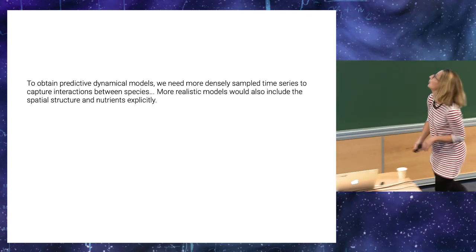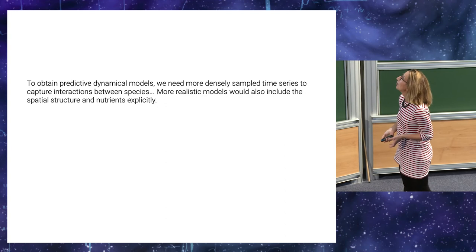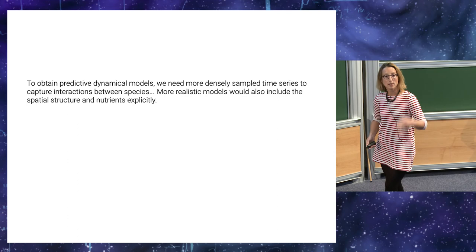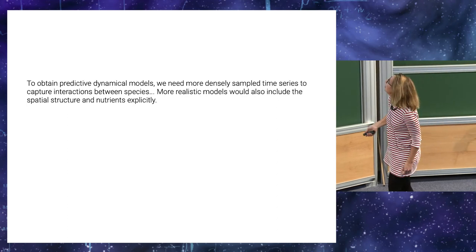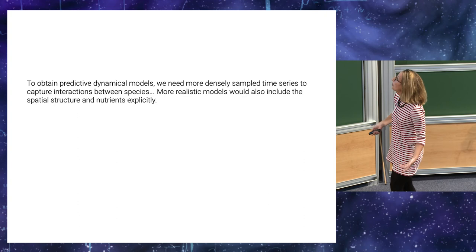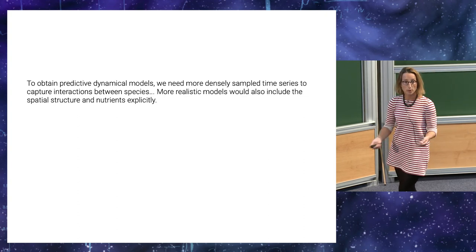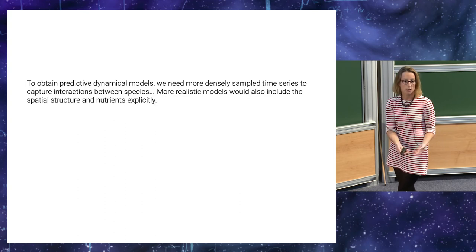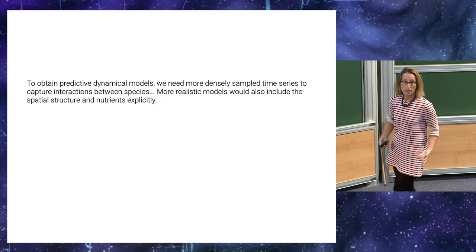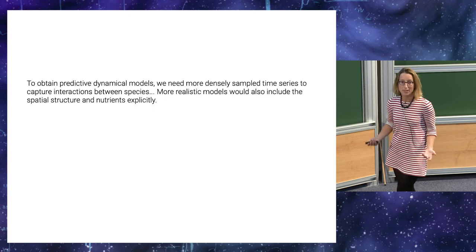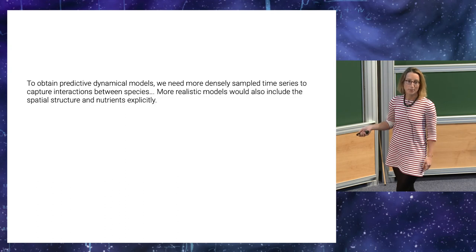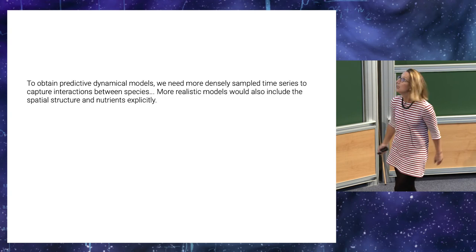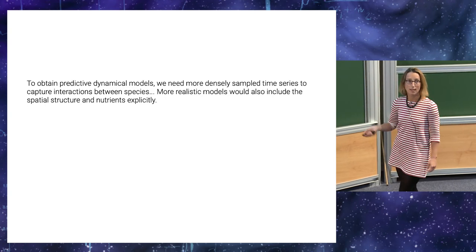So basically, to obtain a predictive dynamical model, I feel the next step is to go to more densely sample time series and to capture the interaction between the species because we know that in bacteria, if you do, you grow two species in the lab, you know, they interact through the nutrients. So we want, we know it plays an important role, but so far we don't see it in this experimental data, but the field is like exploding and there are many experiments being done. So I'm confident that we can progress a lot by having access to better time series.